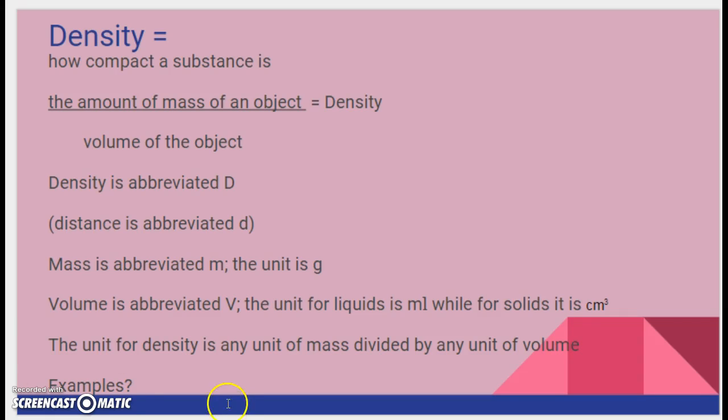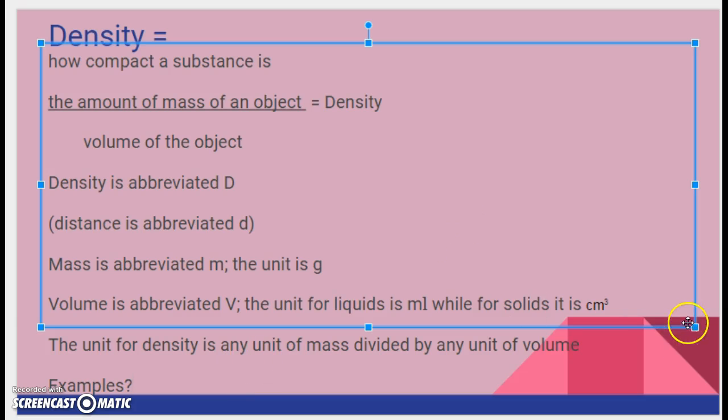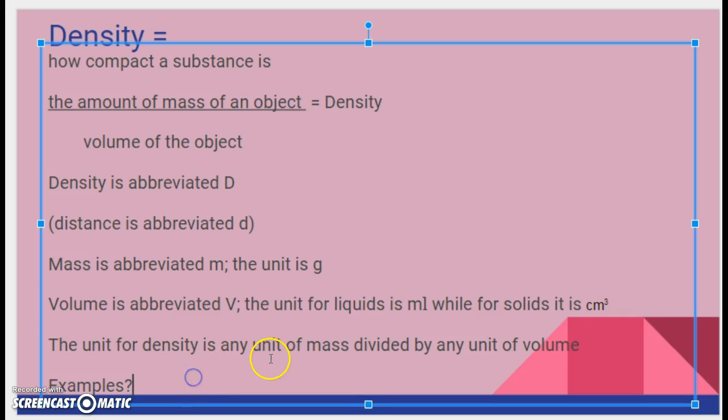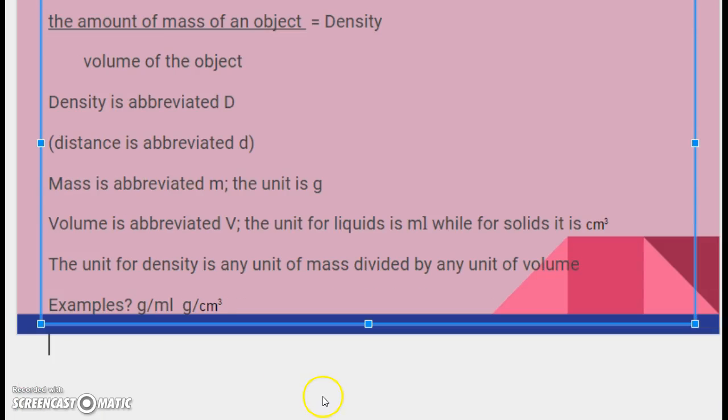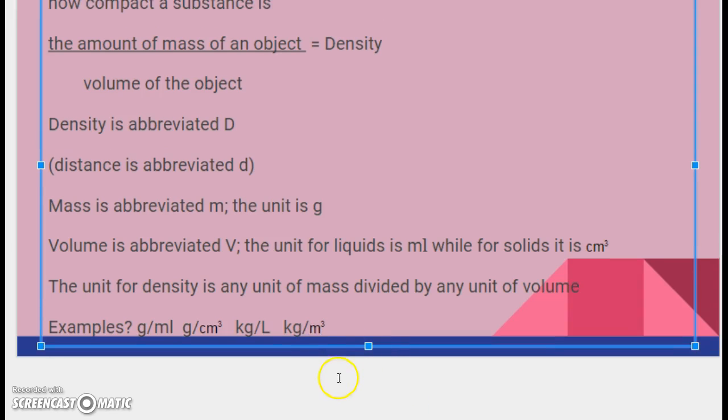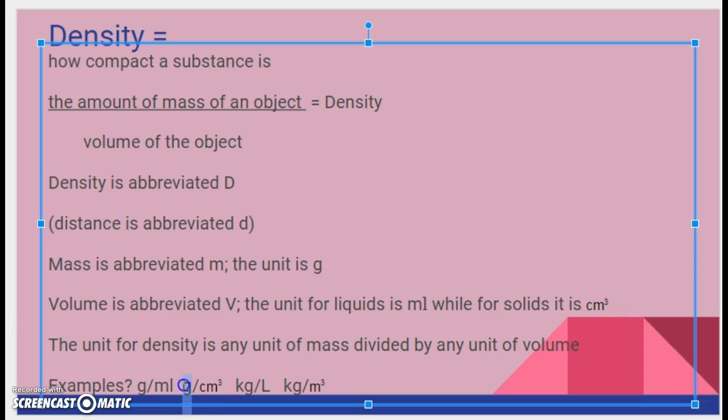Now, what do you think the unit for density is? It's any unit of mass divided by any unit of volume. So we could do a few examples. I could say, alright, what's the unit of mass? Grams per volume? Milliliters. Or grams per what? Centimeters cubed. Now obviously, sometimes we use some different ones, depending on the size. We might have kilograms per liter, kilograms per meters cubed, or any combination of those. But it's always going to be a mass divided by volume. That would be a unit for density.